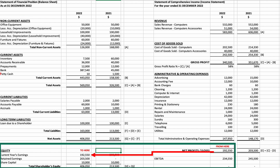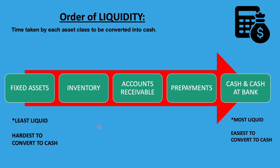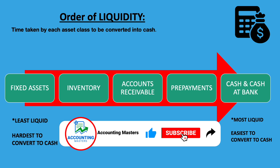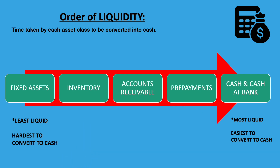You will notice that the top part of the balance sheet are assets, and the bottom part are the liabilities and equity. The assets are presented on the balance sheet by their order of liquidity, which is the time taken by each asset class to be converted into cash. So here we see from the hardest to the easiest. The hardest would be fixed assets — they're listed first because they take longer to liquidate, to sell off and convert to cash, compared to cash at the bank, where it can be withdrawn easily.